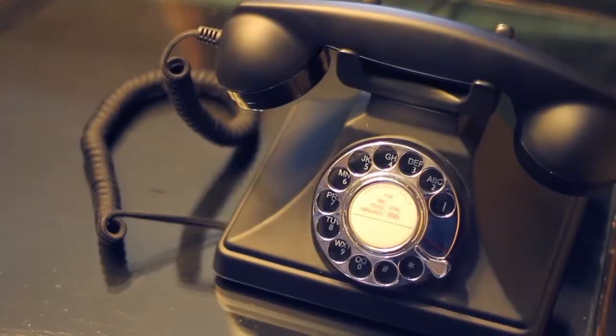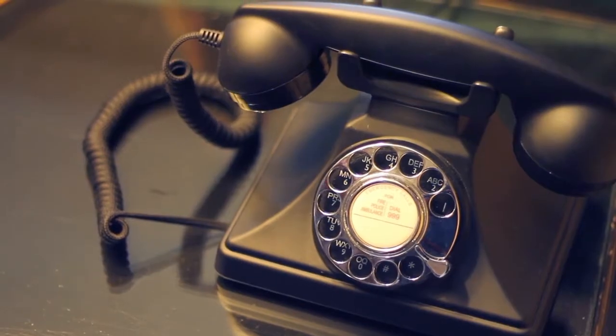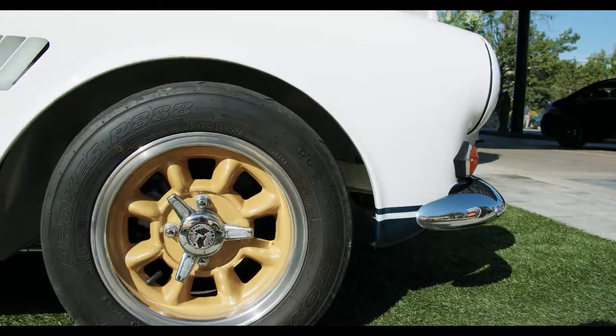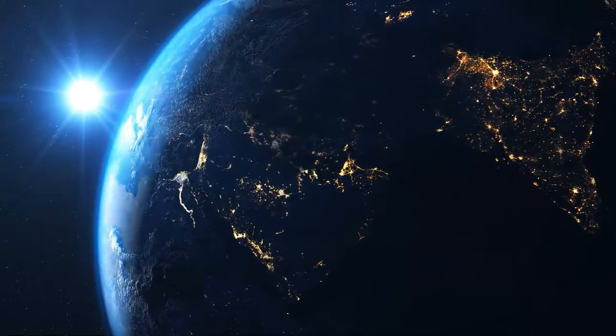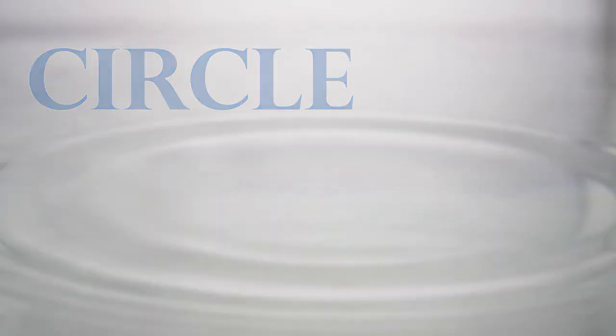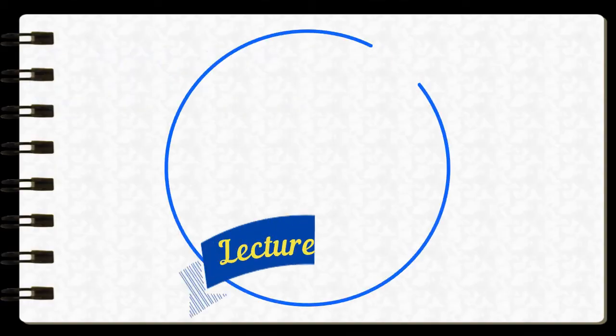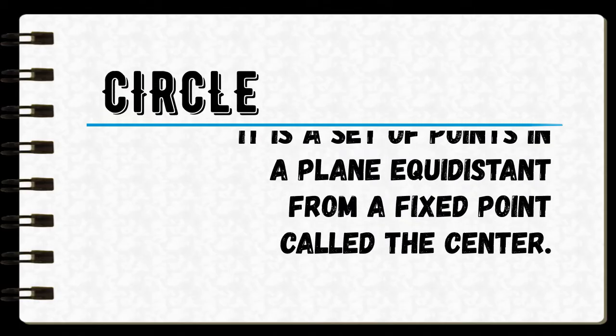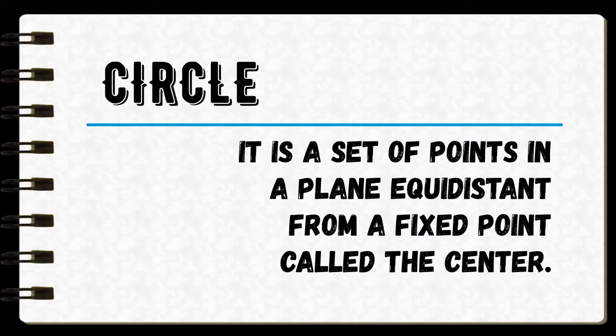What common shape is being illustrated in these objects? Circles, right! Here we're gonna explore the real-world facts about circles. So what is a circle? The circle is a set of points in a plane equidistant from a fixed point called the center.